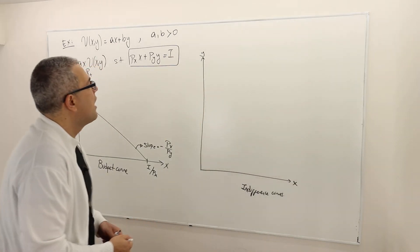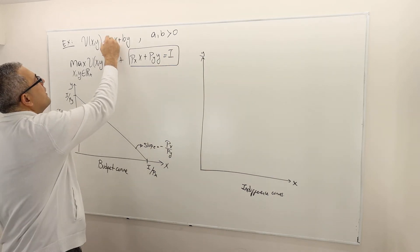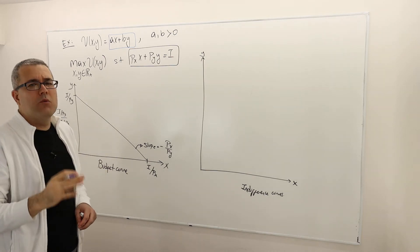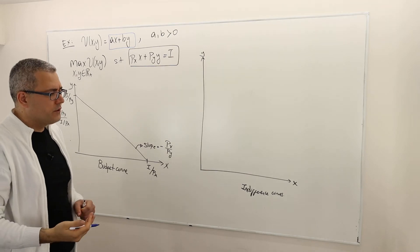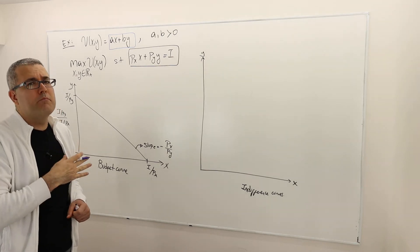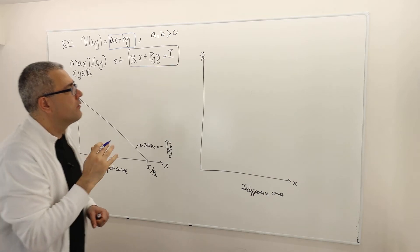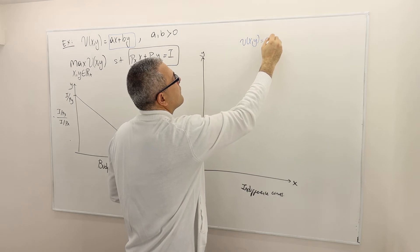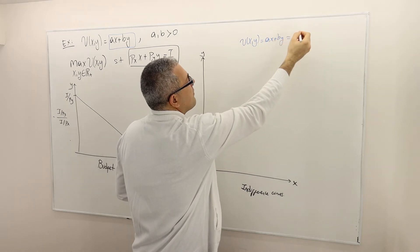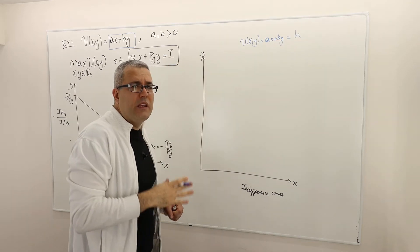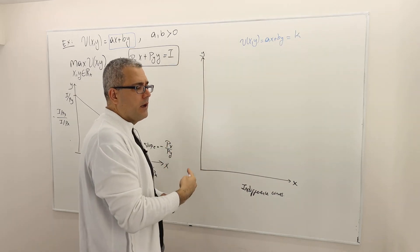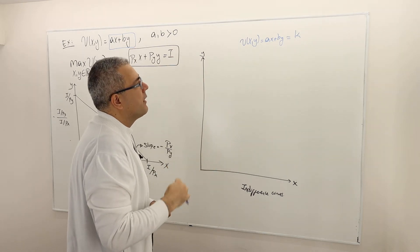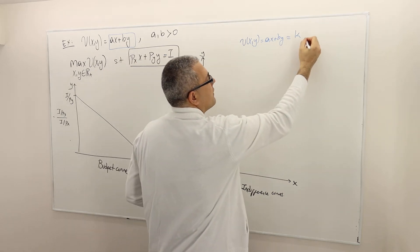Now let's draw the indifference curves. I need the utility function, which is AX plus BY. How do I draw the indifference curves? Well, remember there's not just one indifference curve, there are many. I am going to set U(X,Y) equals AX plus BY equals some constant K. As you increase and decrease this K, your indifference curve is going to shift forward or backward.